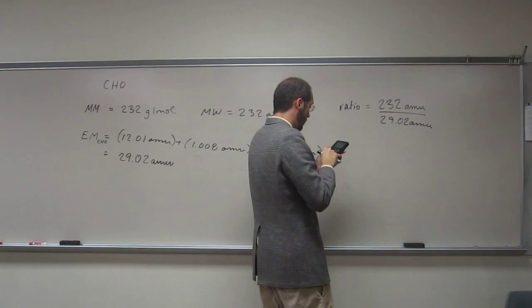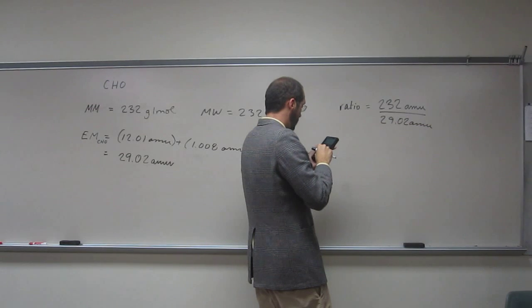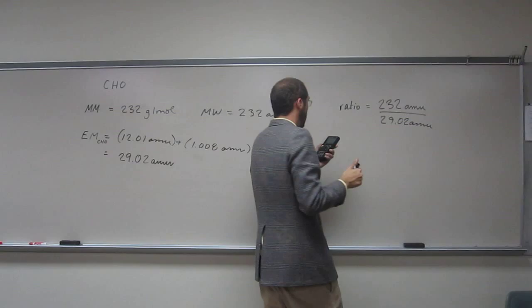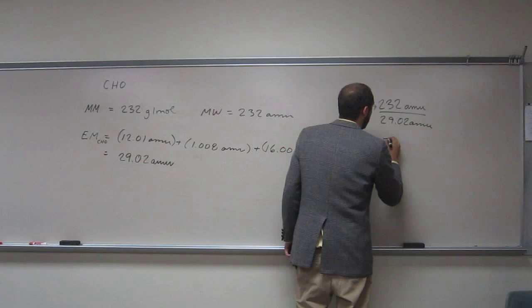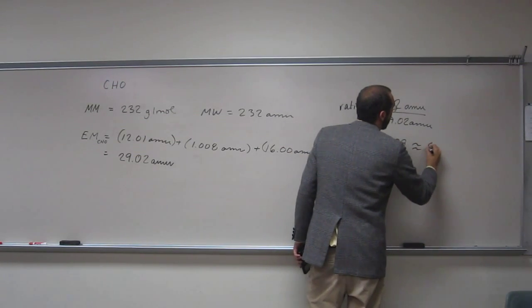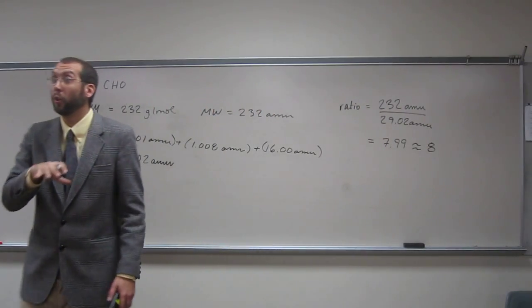So 232 divided by 29.018. And when I do that, I get 7.99 and that's essentially 8, because we're looking for the whole number ratio.